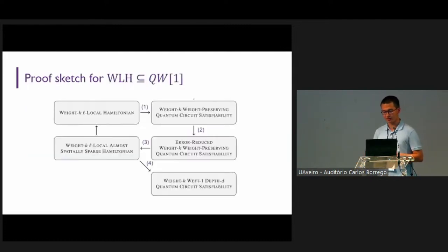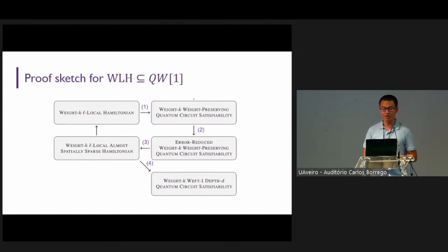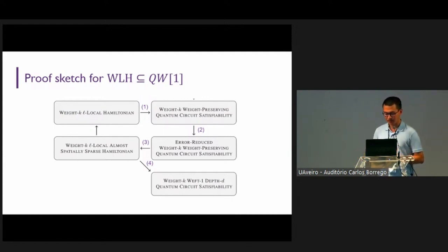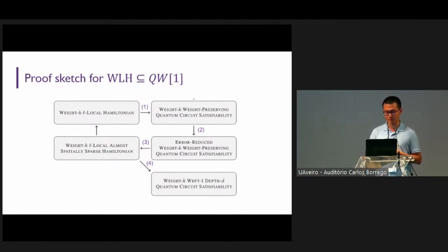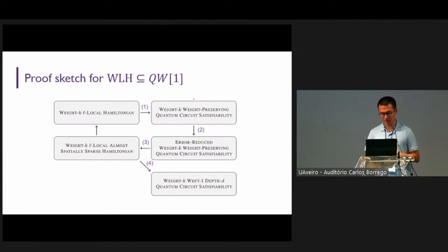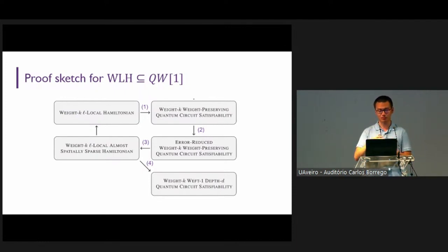Let's see the proof sketch that the weighted local Hamiltonian problem is in QW[1]. It follows from four steps. We start from the local Hamiltonian problem and first transform it into a weight-preserving quantum circuit. By weight-preserving, we mean that at each time slice of the circuit, the weight of the quantum state is preserved. In the second step, we use tools from quantum singular value transformation to reduce the error of this circuit. In the third step, we use a modified Kitaev history state construction to obtain a spatially sparse local Hamiltonian. Finally, by sparsity, we transform these Hamiltonians into a weft-one quantum circuit, proving the problem is in QW[1].